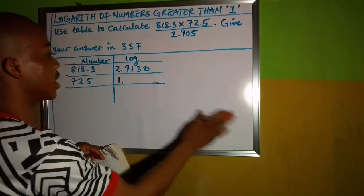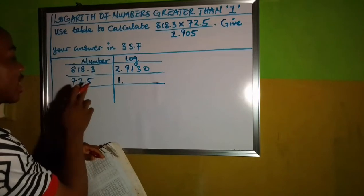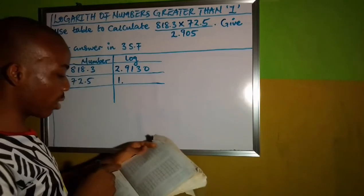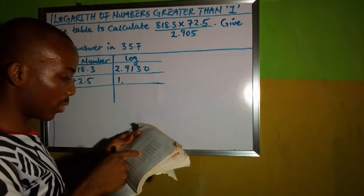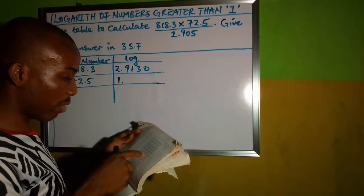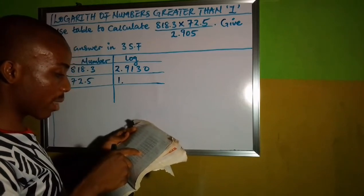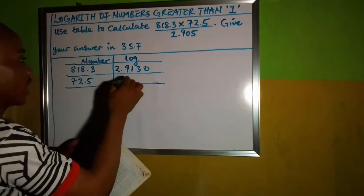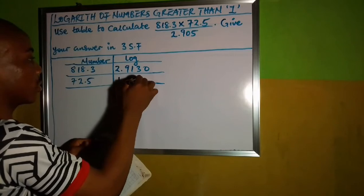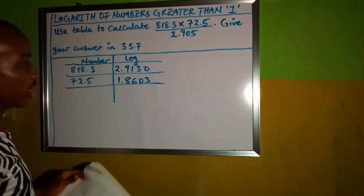You do the same for the next one. 72 under 5. There is no difference. 72 under 5 has to give us 8,603. That's what it's going to give us.